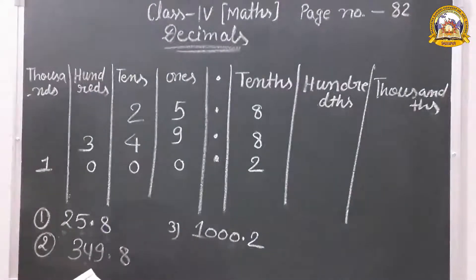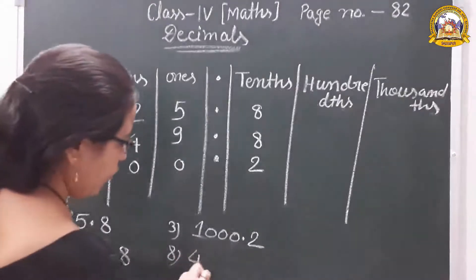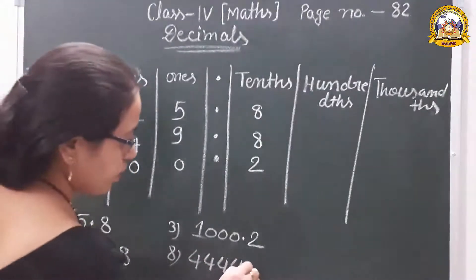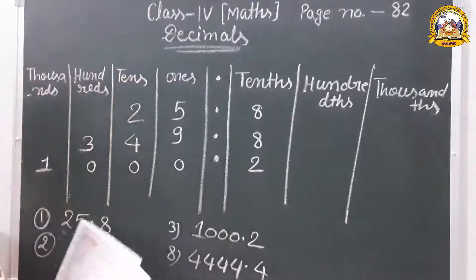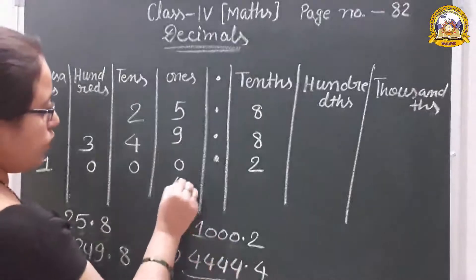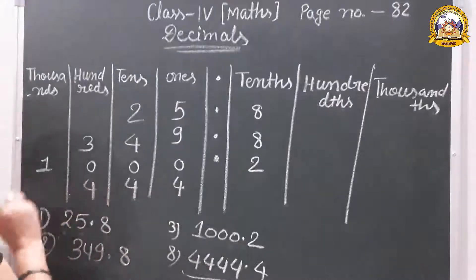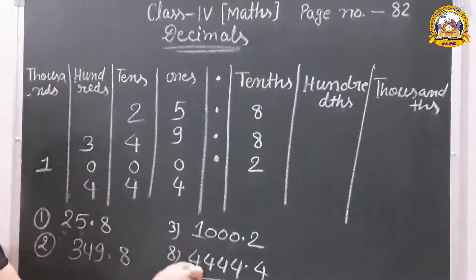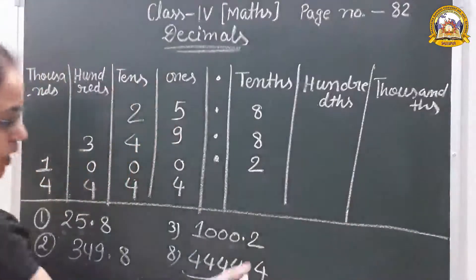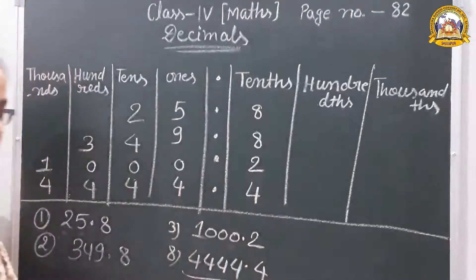Third question: 000.2 — that is, 0 on the ones place, 0 on the tens place, 0 on the hundreds place, then the decimal, and 2 on the tenths place. Question 8: 4444.4 — four thousands, four hundreds, four tens, four ones, then decimal, and 4 on the tenths place.